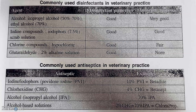Commonly used disinfectants in veterinary practice include isopropyl alcohol and ethyl alcohol, which have both disinfectant and antiseptic properties. Commonly used antiseptics in veterinary practice are also shown. Thank you guys.